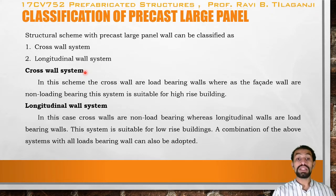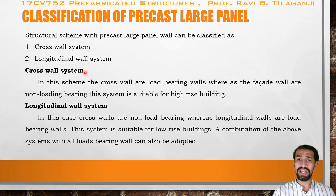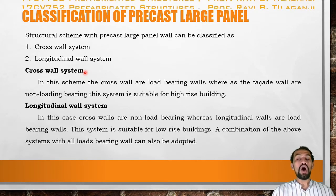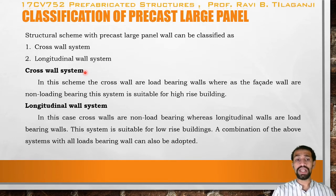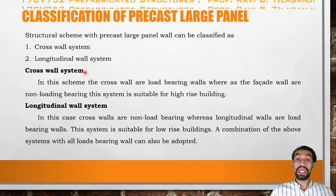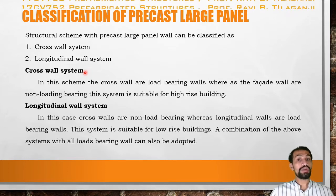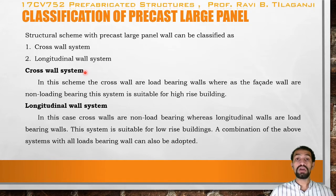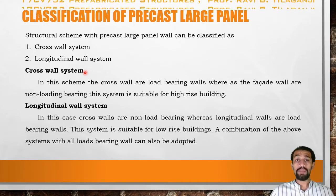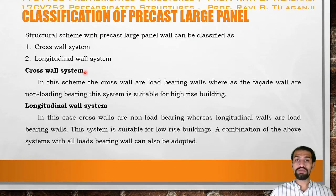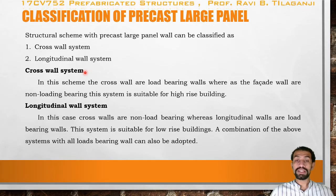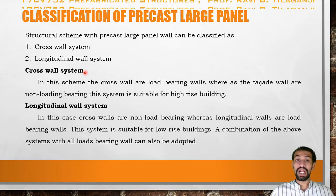In the longitudinal wall system, cross walls are non-load-bearing while longitudinal walls are load-bearing. This system is suitable for low-rise buildings. A combination of both systems with all load-bearing walls can also be adopted. For high-rise buildings, precast columns carry the loads — the slab load transfers to beams or wall panels, which connect to column joints, beam joints, and floor or roofing joints, which then transfer the load to the column. The load-taking capacity and quality of the columns are most important in precast construction.